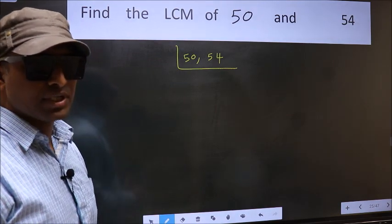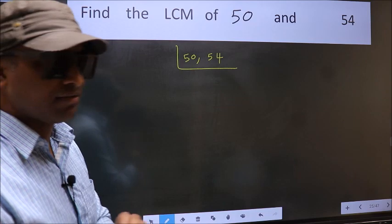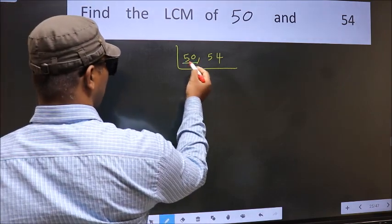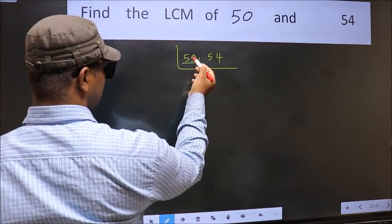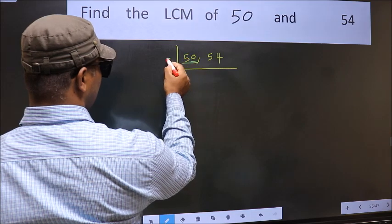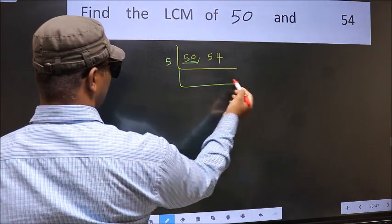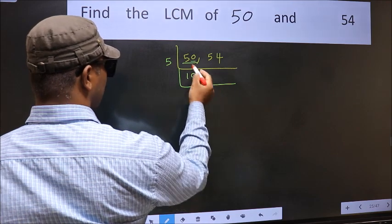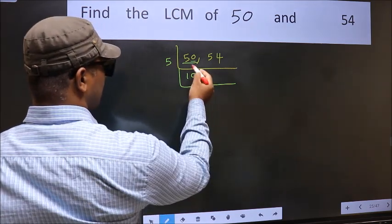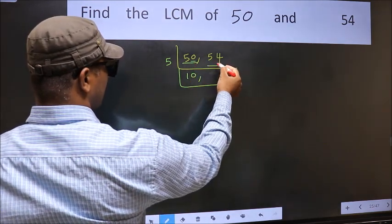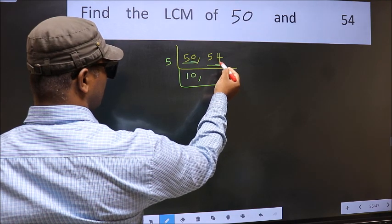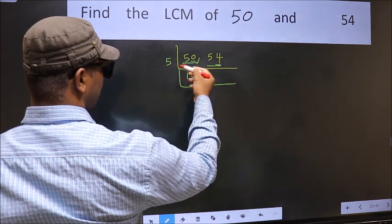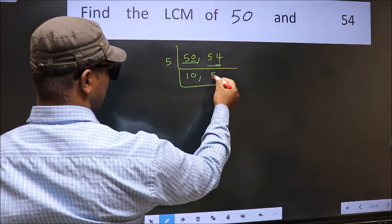Now focus on the first number, which is 50. The last digit is 0, so directly take 5. When do we get 50 in the 5 table? 5 times 10 is 50. Now the other number, 54 — the last digit is neither 0 nor 5, so it is not divisible by 5. So we write it down as it is.